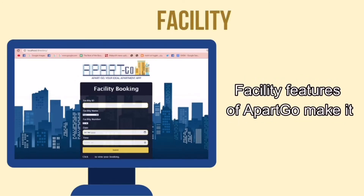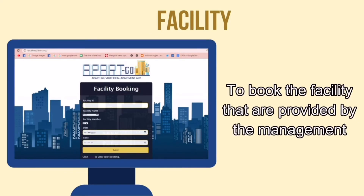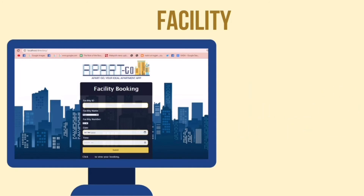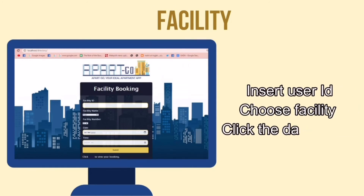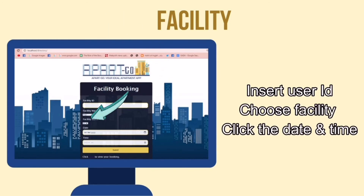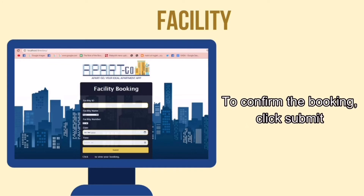The facility feature of ApartGo will make it easier for apartment residents to book the facility provided by the management. The user just needs to insert their user ID, choose the facility they want, and click the date and time they want to use the facility. To confirm the booking, click Submit.